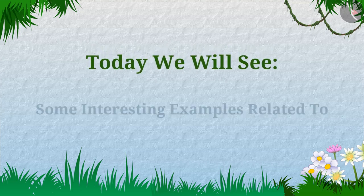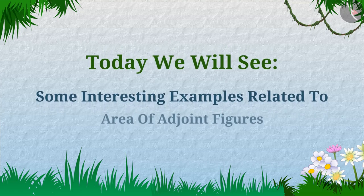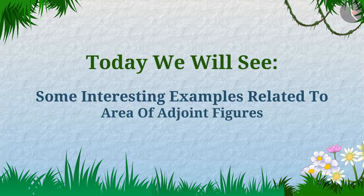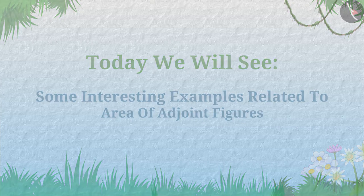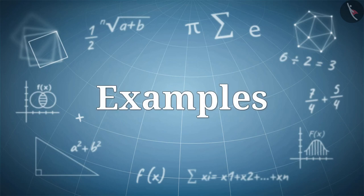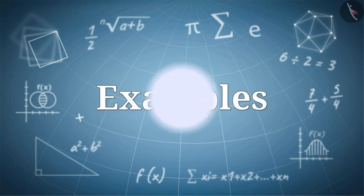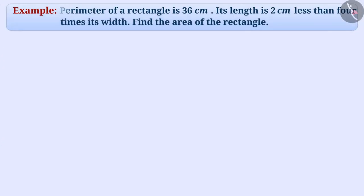Today we will see some interesting examples related to the area of adjoined figures. The perimeter of a rectangle is 36 cm. Its length is 2 cm less than 4 times its width. Find the area of the rectangle.